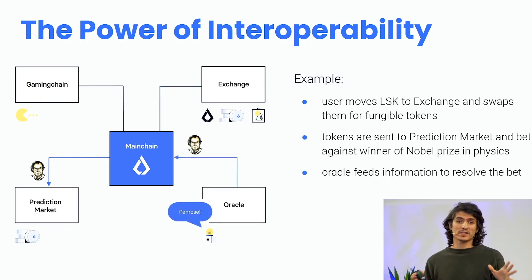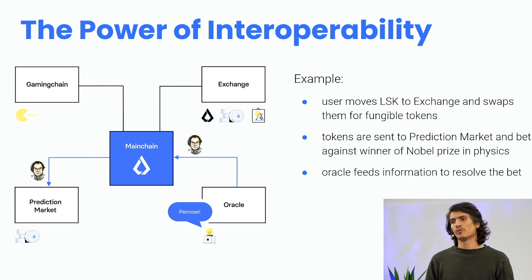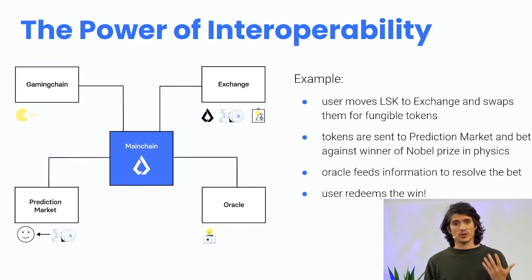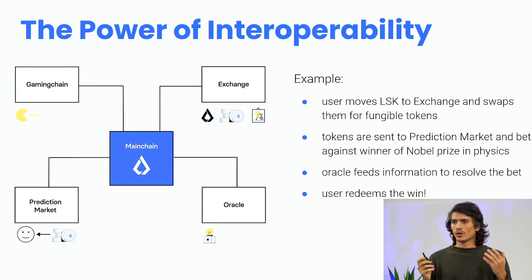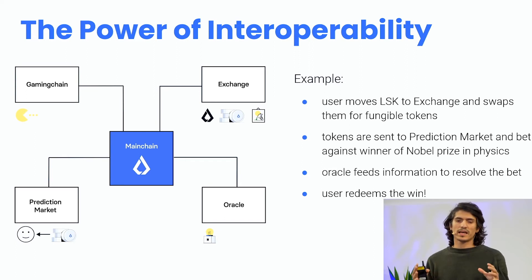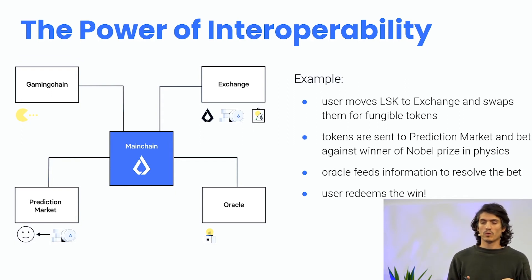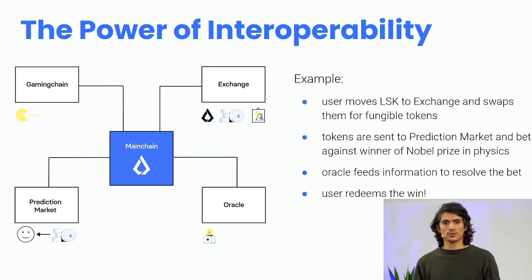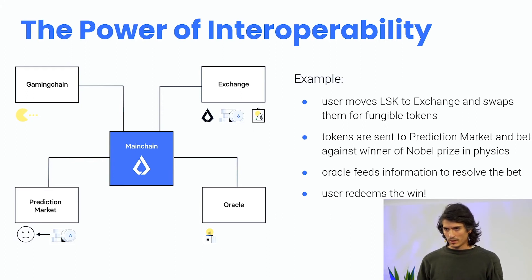In the third step, an Oracle sidechain feeds external information, again with a cross-chain custom transaction, to the prediction market sidechain — indeed confirming that Penrose won the Nobel Prize in Physics. Finally, the prediction market can process the bet and the user can redeem their funds. What we saw here is really the power of interoperability, where the whole is greater than the sum of its parts. These sidechains achieved new features they didn't have by using interoperability to communicate with each other. The LISC balance transfer will be the common denominator of the whole ecosystem, where users first move LISC funds to a sidechain and then use cross-chain custom transactions to interact.